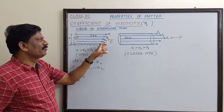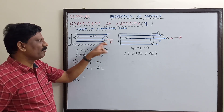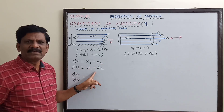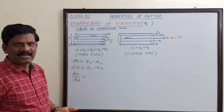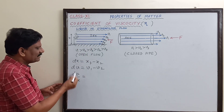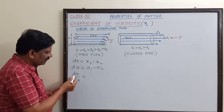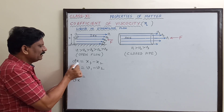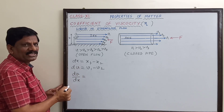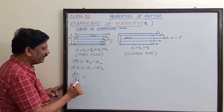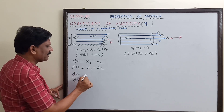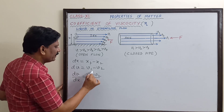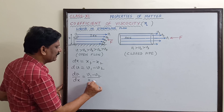For example, if you take the first and fourth layers, it would be x1 minus x4 and v1 minus v4. In general, for any two layers separated by distance dx, the relative velocity is v1 minus v2, so dv/dx equals (v1 − v2) / (x1 − x2).